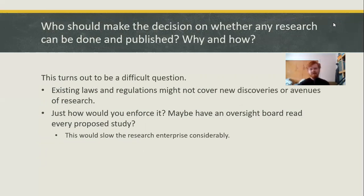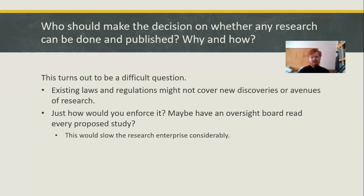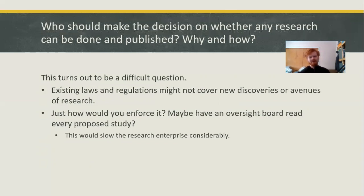Who should make the decision on whether research can be done and published? This turns out to be a really difficult question — not easy to answer just right out of hand. Existing laws and regulations might not cover new discoveries and avenues of research, even if they're dangerous. We have a system in this country called ex post facto laws — they're illegal. We can't prosecute someone after we make something illegal; you can only prosecute them if they committed the crime while it was already illegal. Present regulations might not cover the thing anyway. And then, how would you enforce putting limits on research? You could have an oversight board read every proposed study, but wouldn't that just slow things down considerably and move research to other places? Probably.